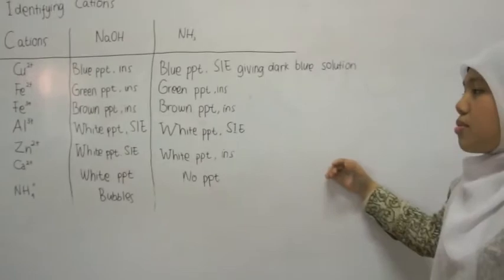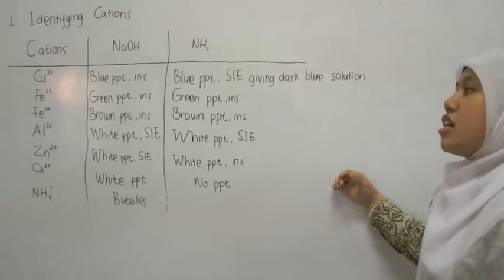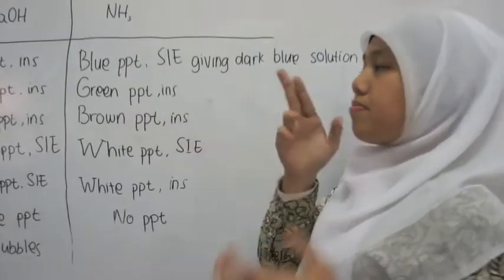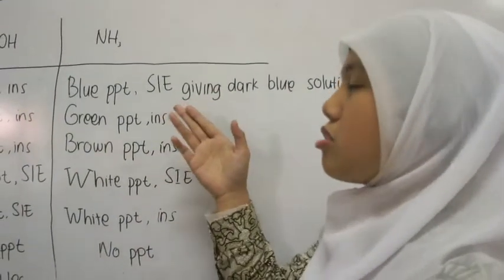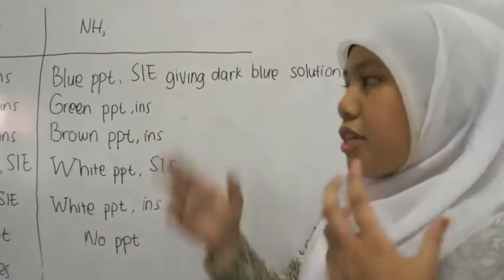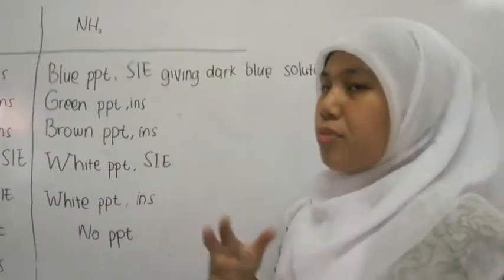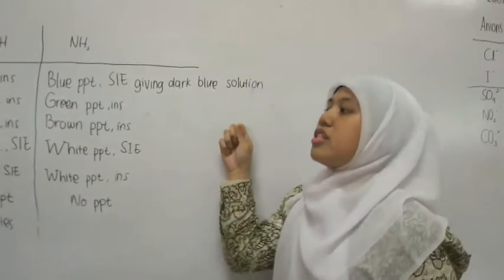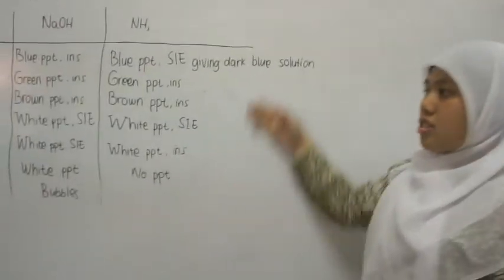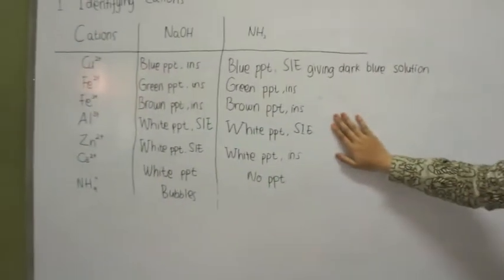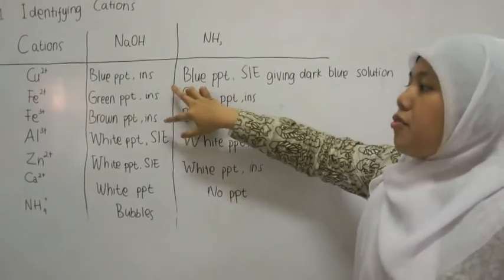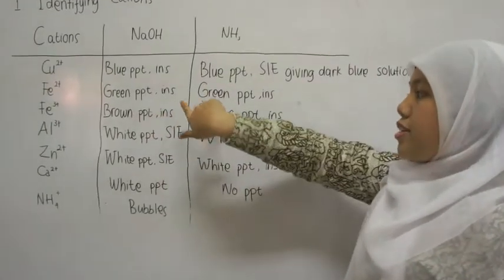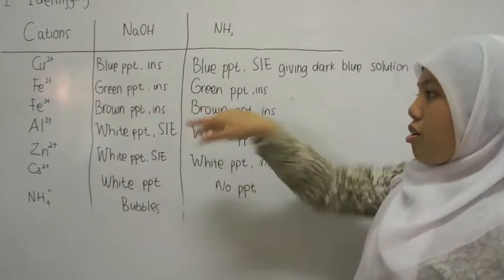But if you test with ammonia, for a few drops only, it will form a blue precipitation also. But if you keep adding it more and more until it's in excess, it will become soluble and give a dark blue solution. And as you can see in this table, for both ions of iron, it will form a different color precipitation.